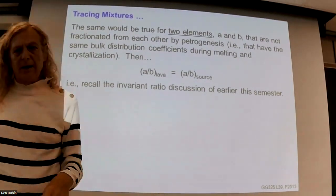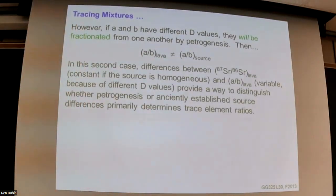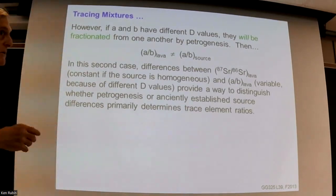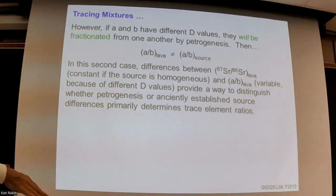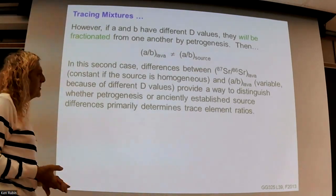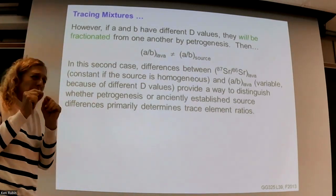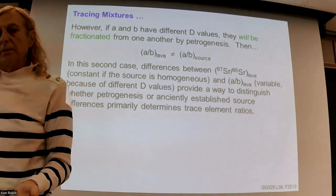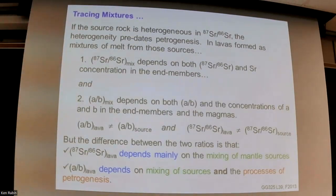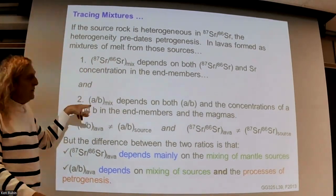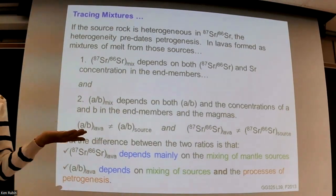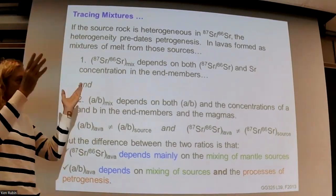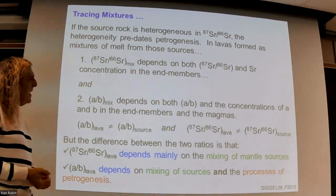A trace element ratio in a lava doesn't necessarily equal what it was in the source, perhaps because we melted to a really small degree. The rocks the campus sits on are unusually silica-undersaturated magmas with extreme trace element concentrations, thought to come from a very small-degree melt from the mantle. The smaller the melt fraction, the more you fractionate incompatible element ratios — and so we can look at these ratios and try to figure out where that variation came from: the mantle composition, how the mantle is melting, or something that happened after the magma left.